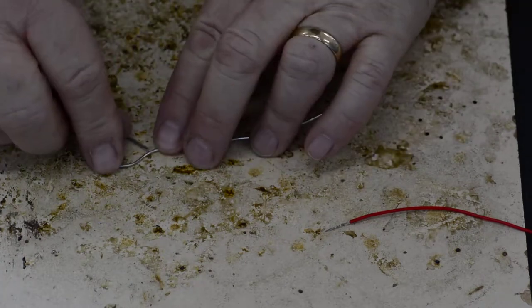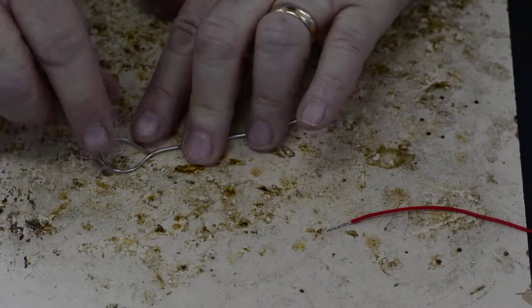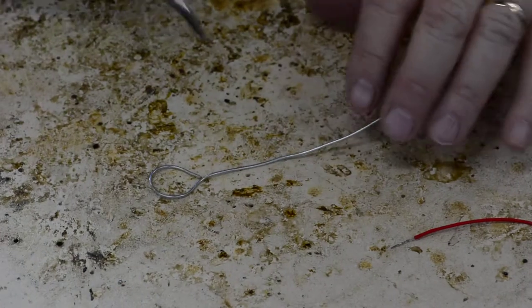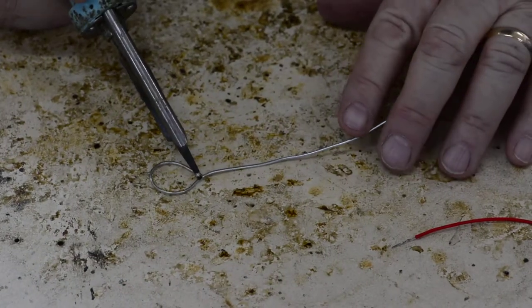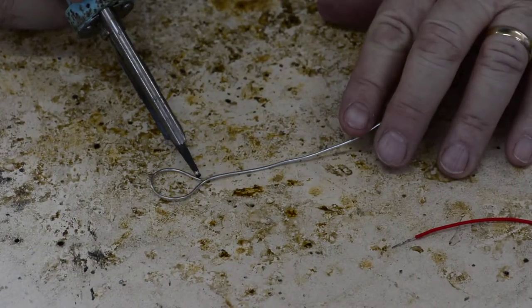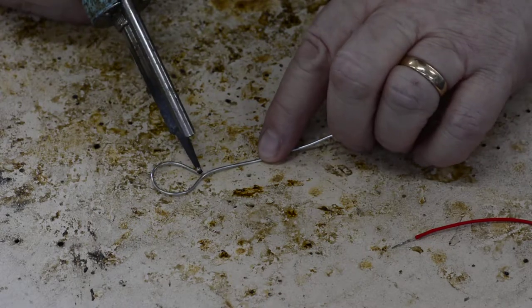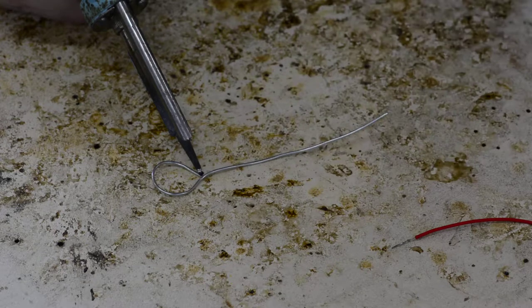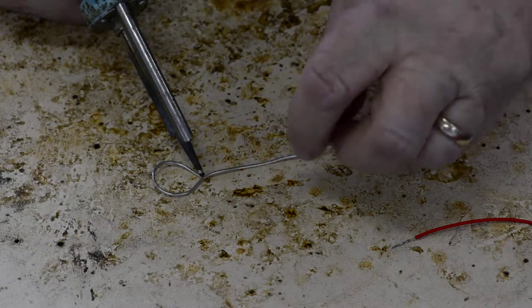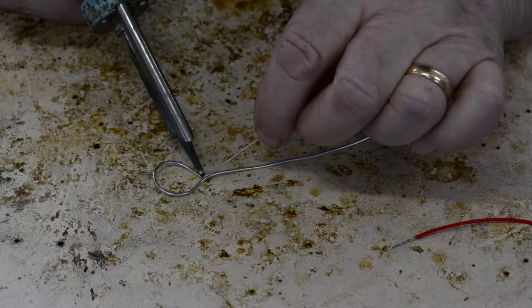We can lay that down and then solder it together. It's a matter of just holding the soldering iron onto both pieces so that they heat up, then add a piece of solder.